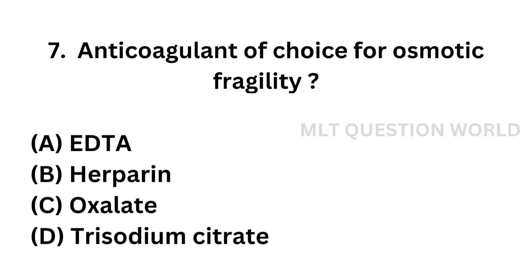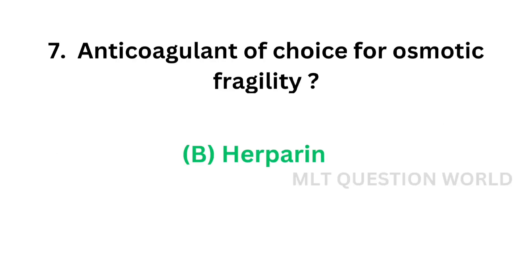Question number seven: Anticoagulant of choice for osmotic fragility test — Option A: EDTA, Option B: Heparin, Option C: Oxalate, Option D: Trisodium citrate. The correct answer is Option B — Heparin. Anticoagulant of choice for osmotic fragility test is Heparin.